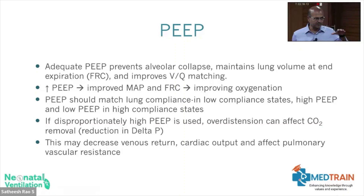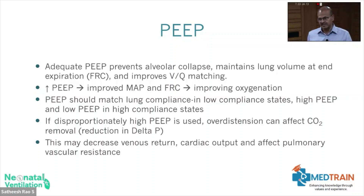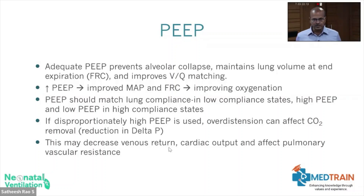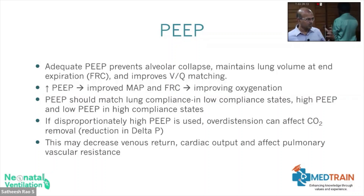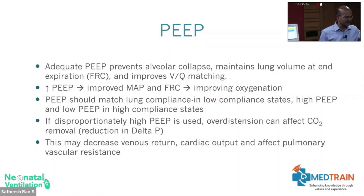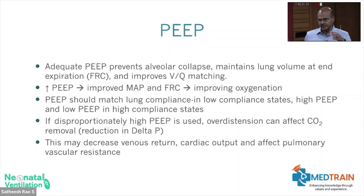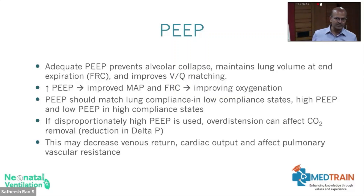If PEEP is disproportionately high, CO2 removal may be affected because delta P — the gap between PIP and PEEP — is reduced. Delta P is essentially a pressure difference. Over-distension also affects venous return and cardiac output, and can cause iatrogenic pulmonary hypertension. Inadvertent PEEP over-generation raises pulmonary pressures, so you may think the baby is deteriorating because oxygenation is worsening when you are actually causing the problem. If you see over-distension with oxygenation difficulty, do not increase pressure.